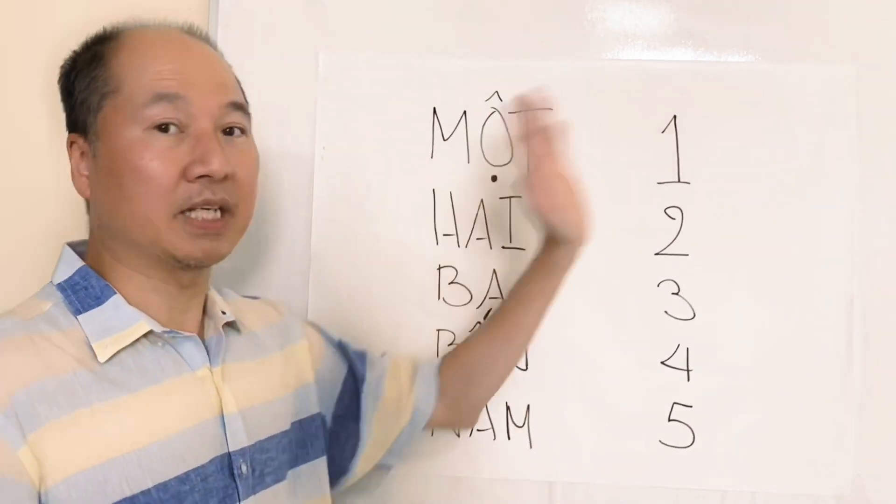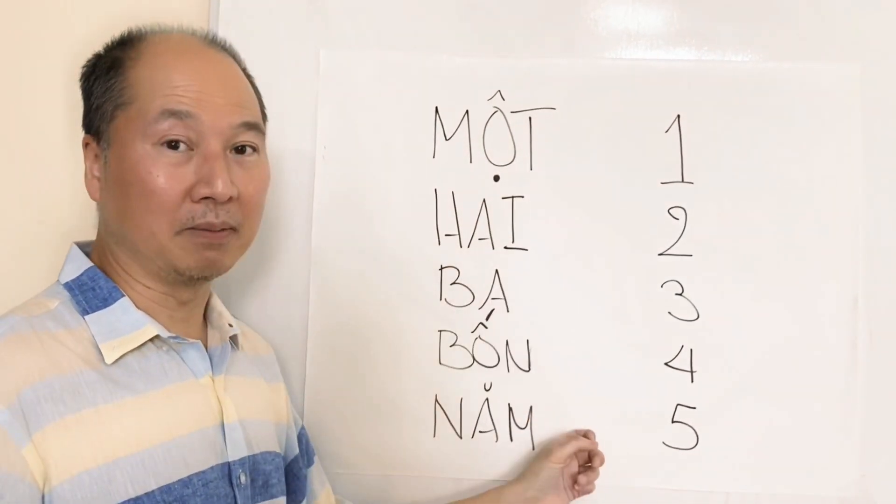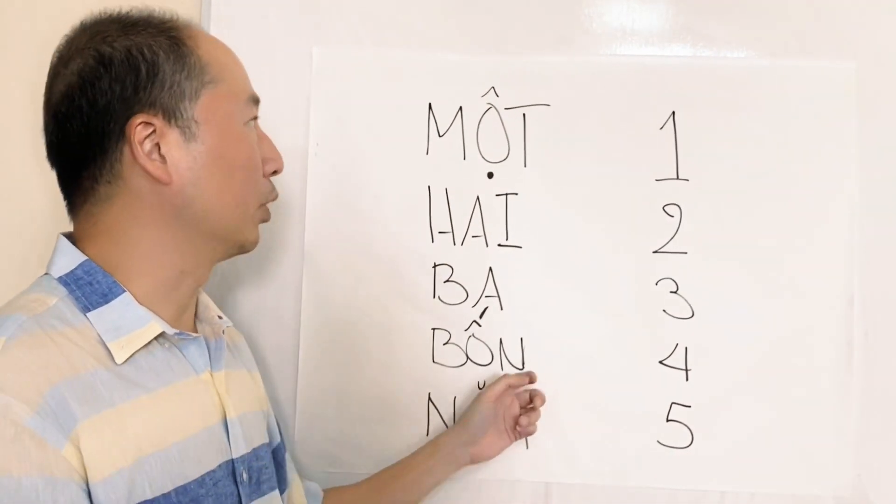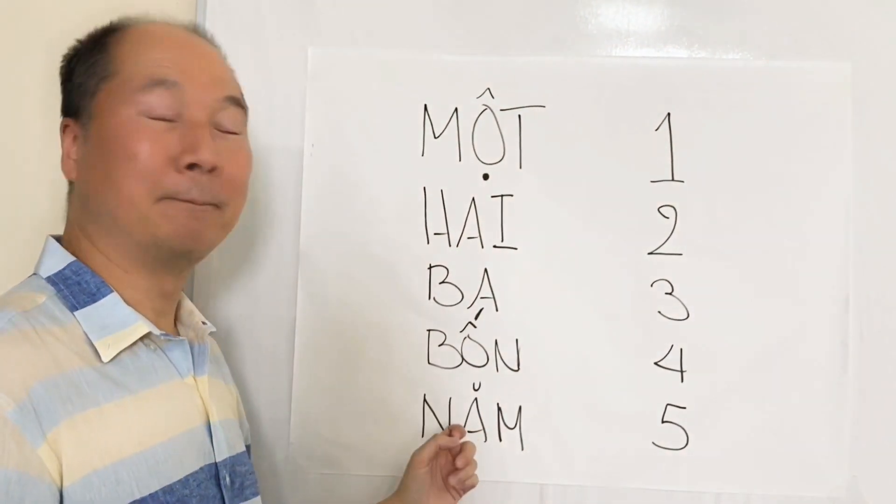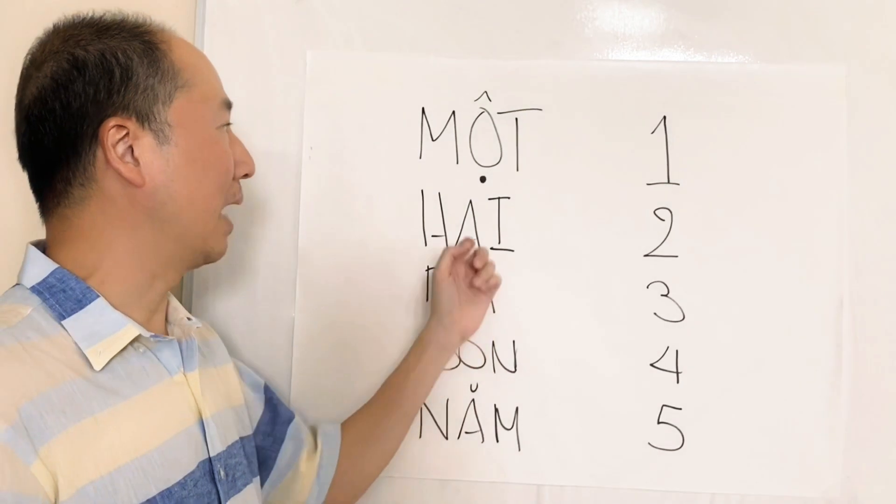So this is part one of a video. In the next video, I'm going to show you how to count from six through ten. So before I wrap up one more time, một, hai, ba, bốn. Năm, năm, bốn, ba, hai, một.